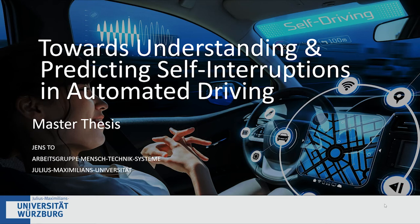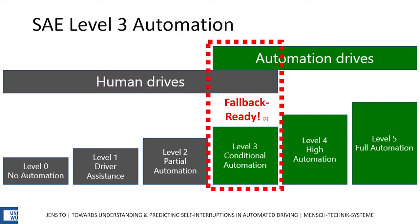Towards understanding and predicting self-interruptions in automated driving. The Society of Automotive Engineers defines six levels of automation. Level 3 is the first level where drivers can enjoy other activities as long as they remain fallback-ready, which means being able to take over control safely after a request.